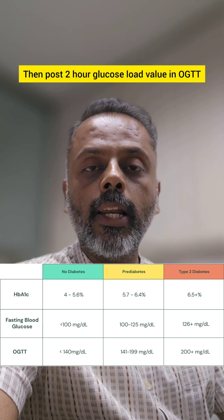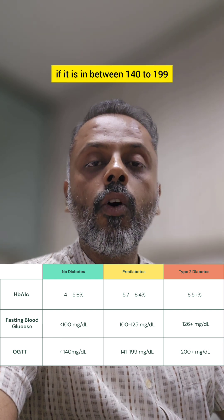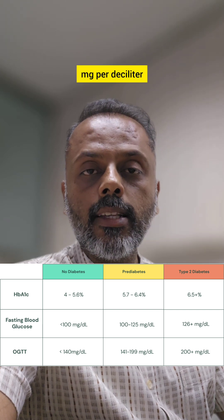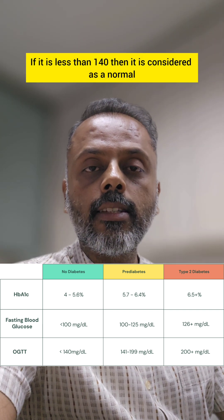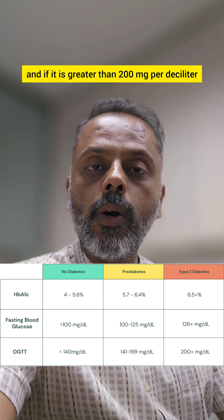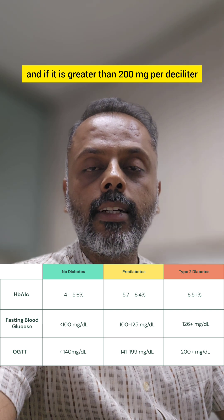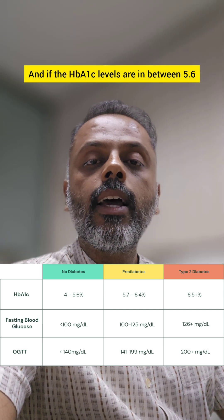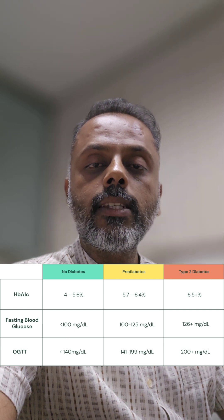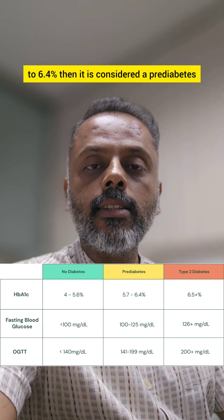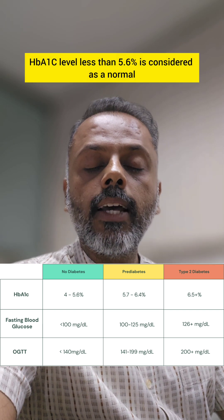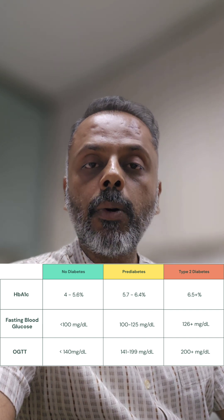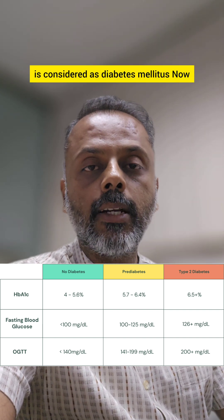The post 2-hour glucose load value in OGTT, if it is in between 140 to 199 mg per deciliter, is considered pre-diabetes. If it is less than 140 it is normal, and if it is greater than 200 mg per deciliter it is considered as diabetes mellitus. And if the HbA1c levels are in between 5.6 to 6.4 percent it is pre-diabetes; less than 5.6 percent is normal and greater than 6.5 percent is diabetes mellitus.